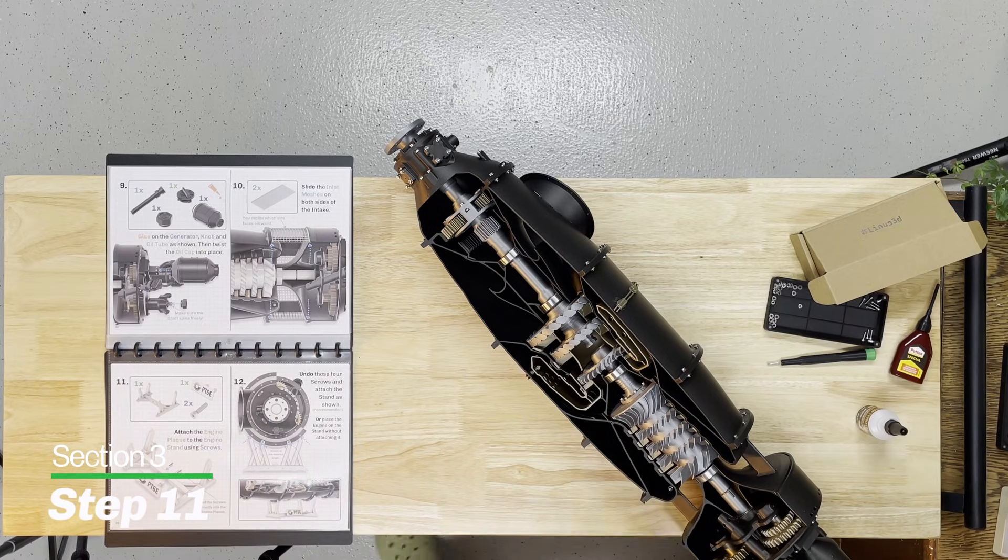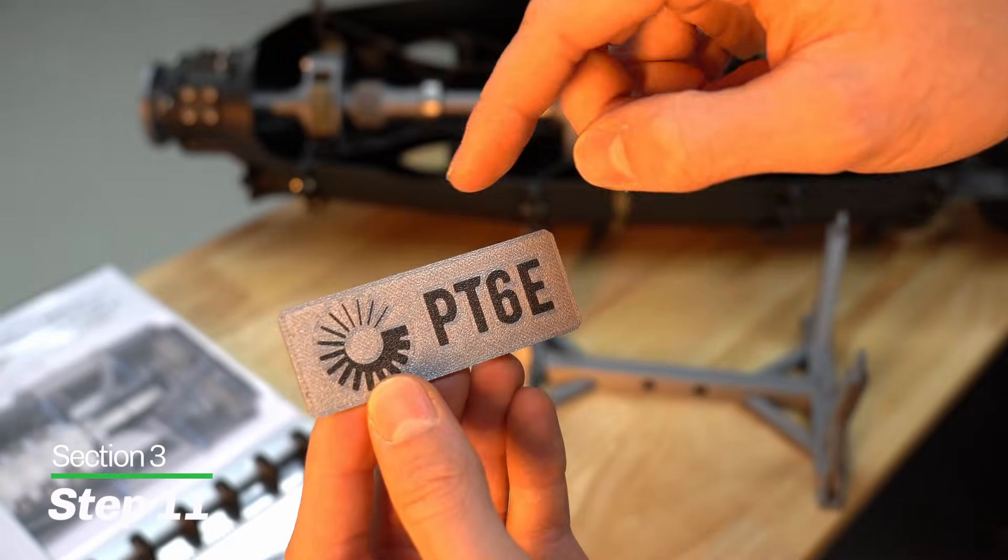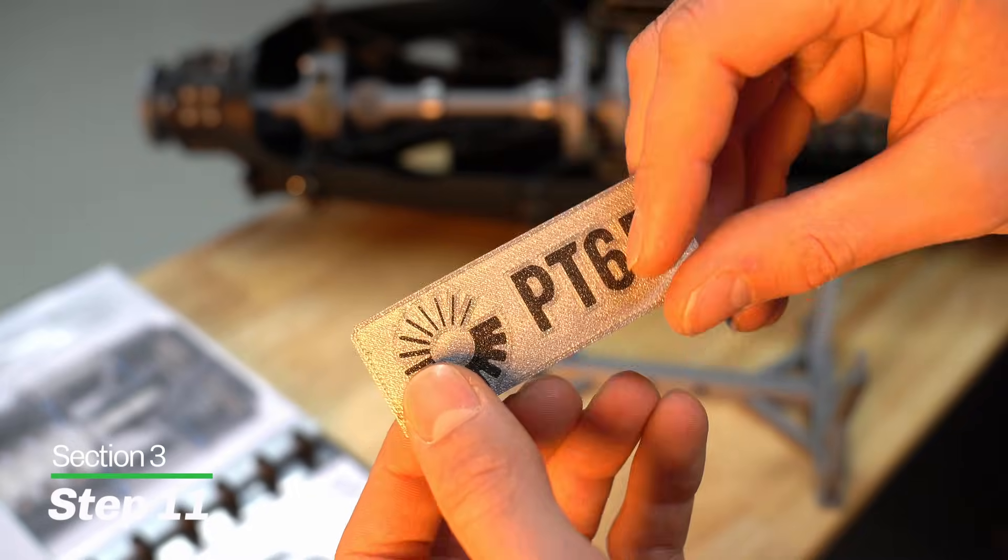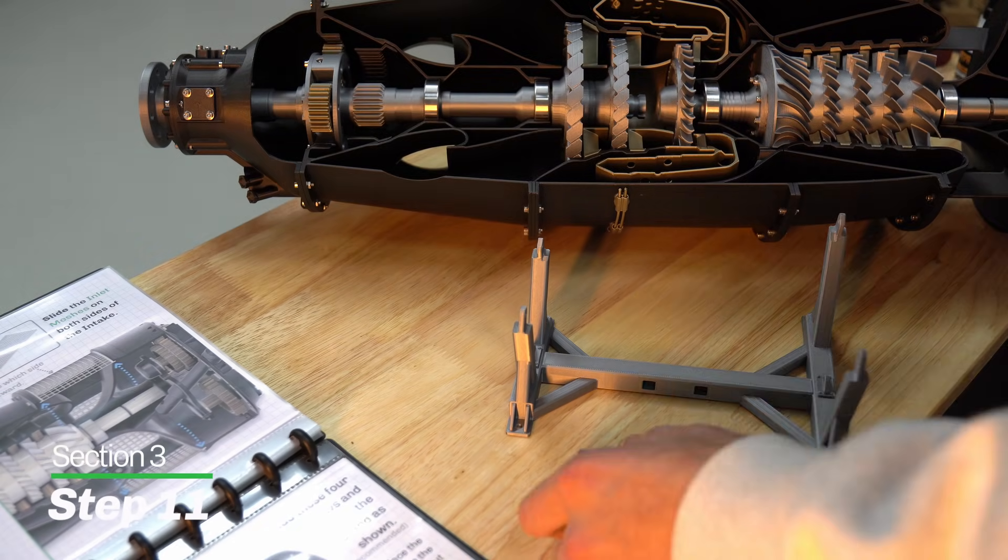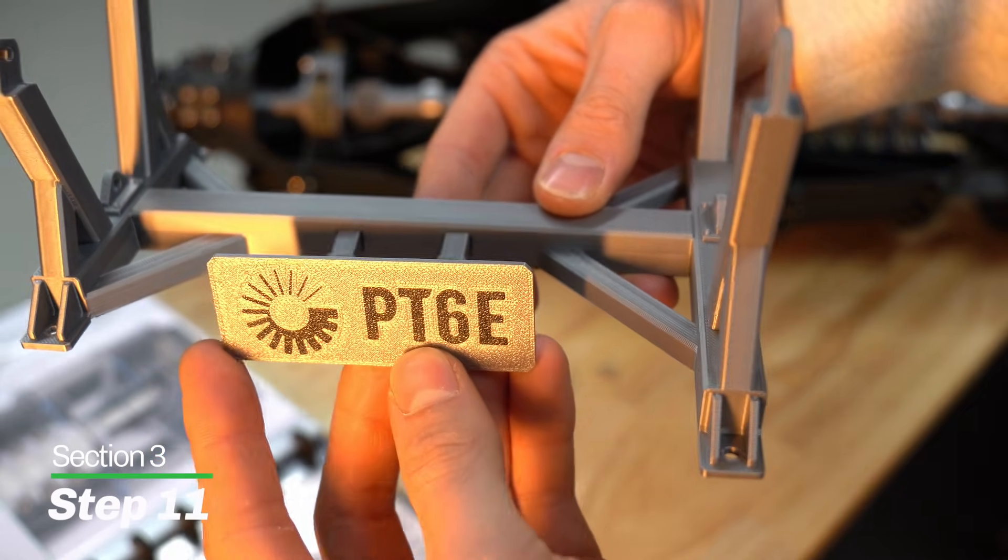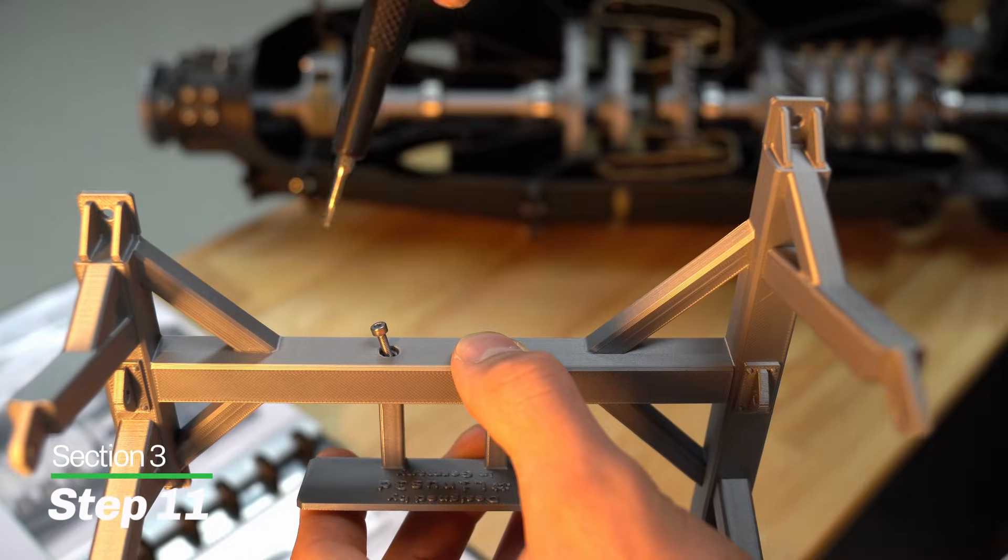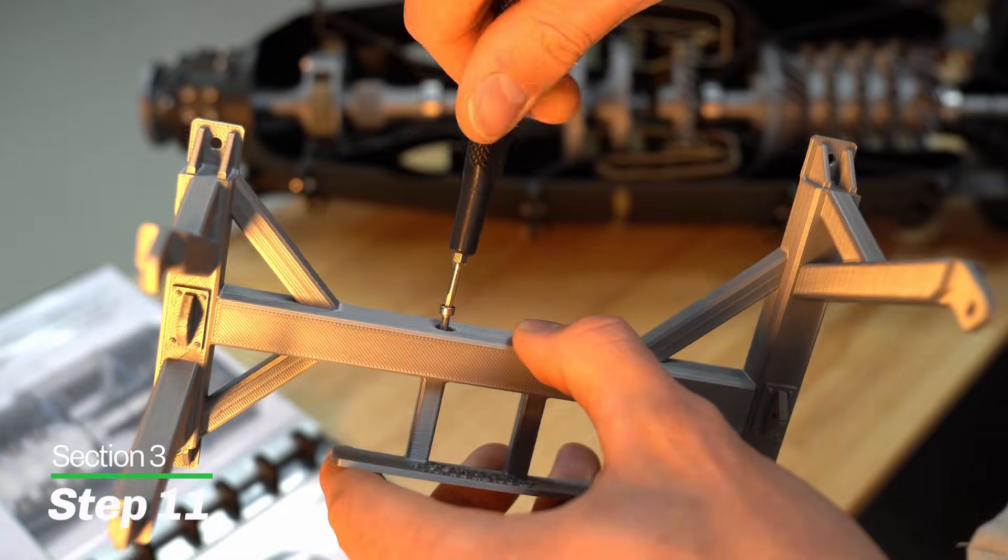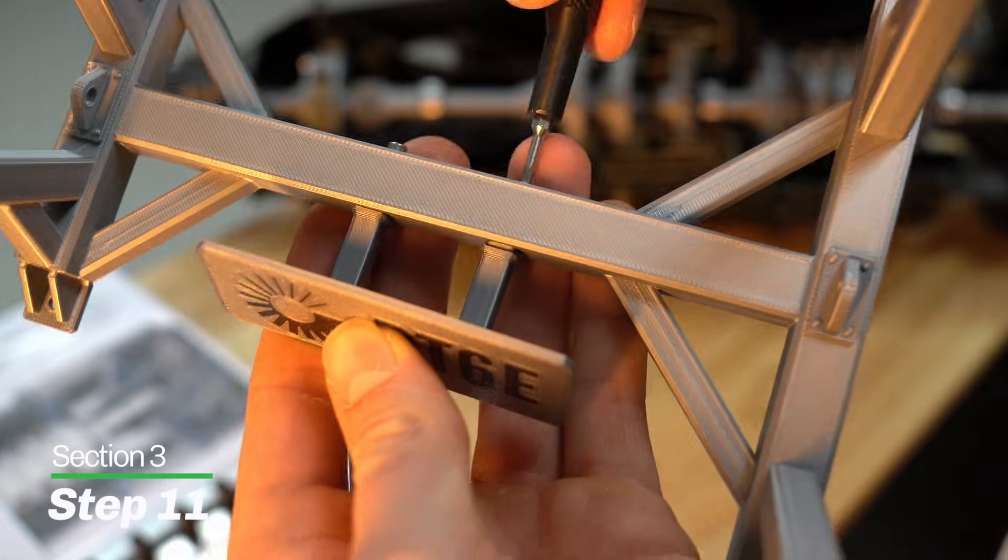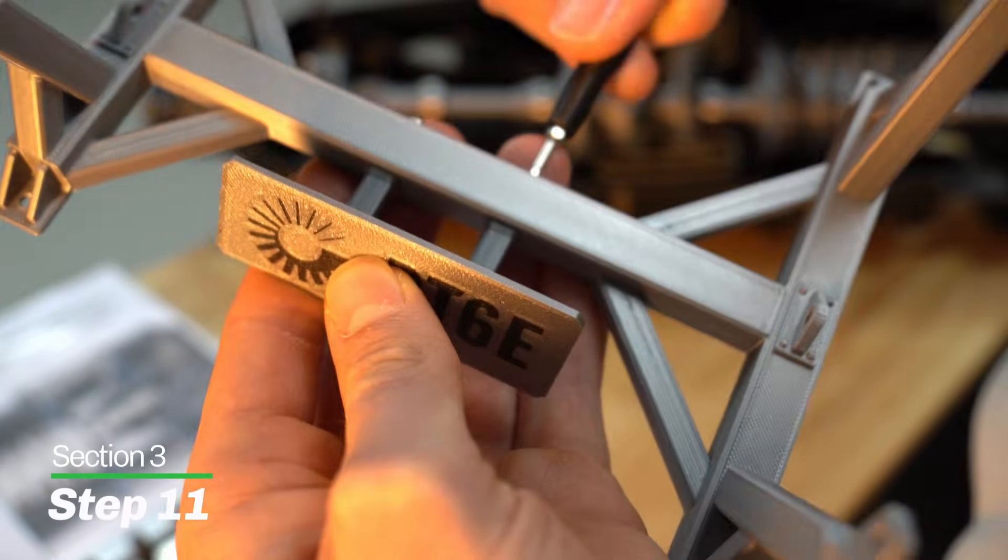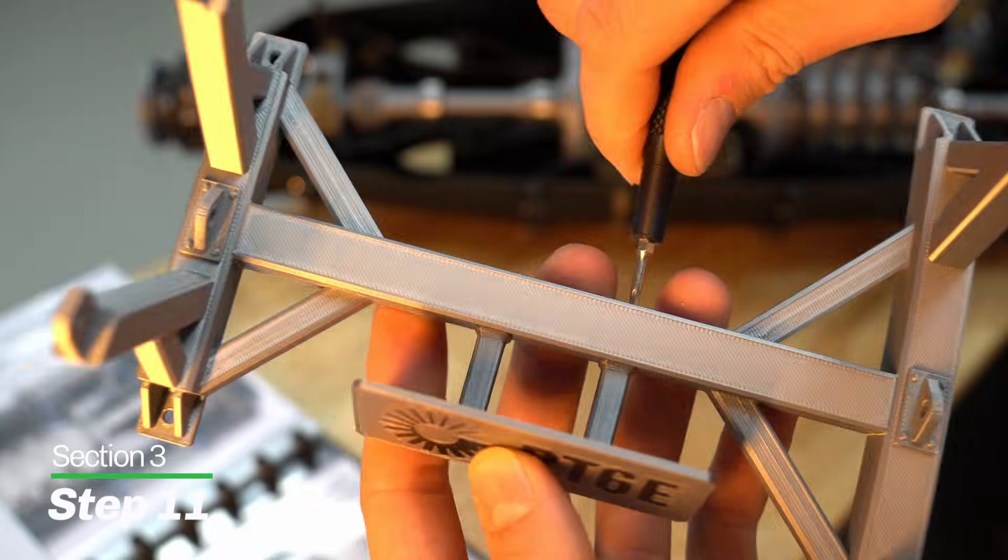Step number 11. We're getting really close to the end now. We're going to grab our engine stand and our engine plaque, the only part printed in two colors. You can do this with any color you want. We're going to need two screws and insert the plaque into the stand just like that and fasten it down using your screws. Super simple and straightforward. You don't need washers, just the screws. This self-taps straight into the engine plaque and makes for a really secure connection. Your engine plaque will not be going anywhere. This is a display model. I hope you're not throwing things around too much.